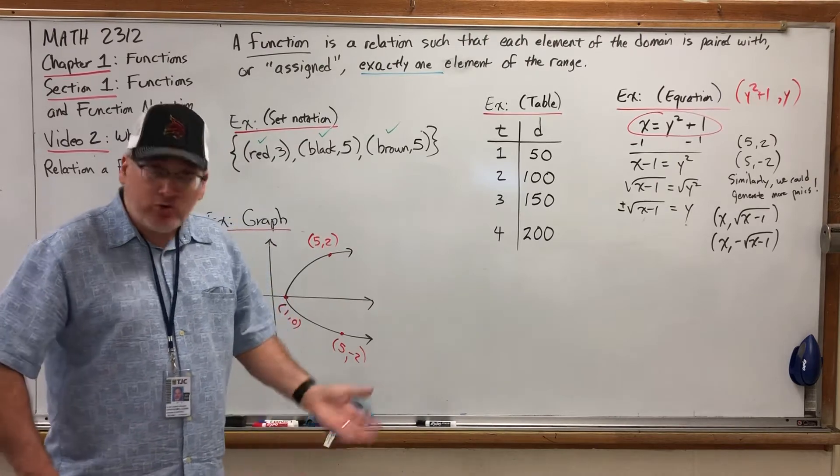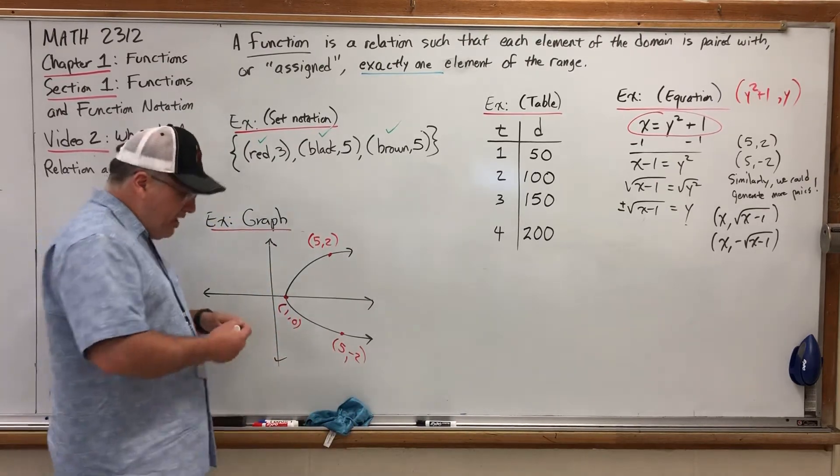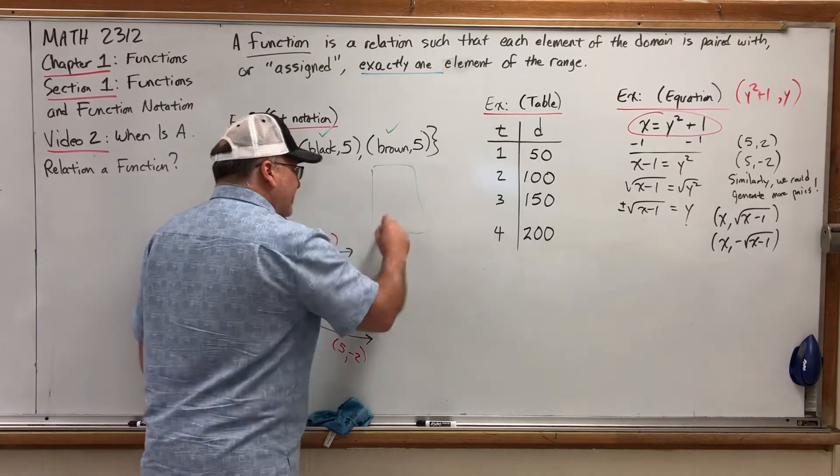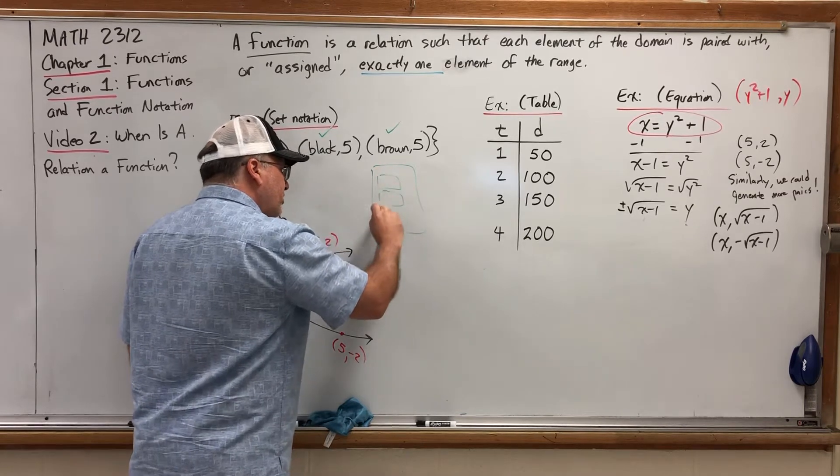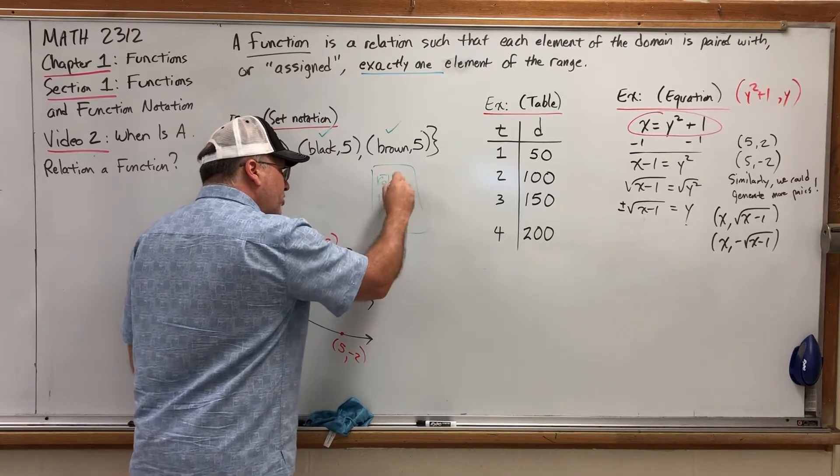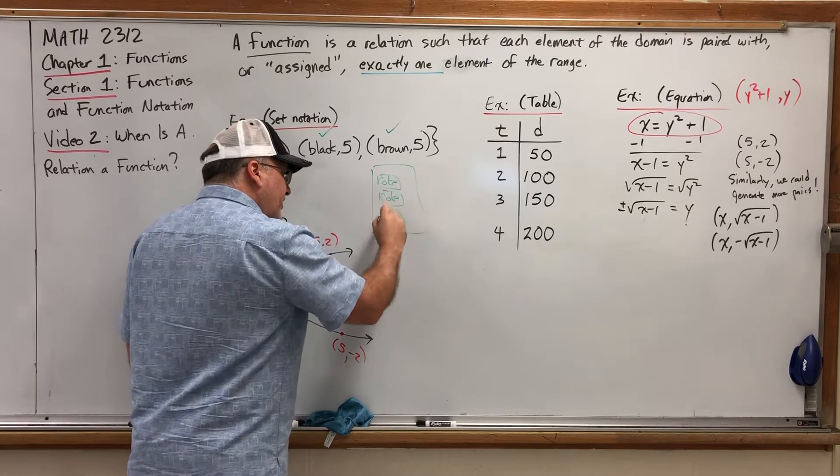It doesn't say each element of the range is paired with exactly one value from the domain, but rather each element of the domain is paired with exactly one value from the range. In other words, it's okay if multiple X's are paired with the same Y's. Think of it as a vending machine that dispenses sodas, Cokes, if you will, and you had a machine that had three buttons on it. One of them said Coke, one of them said Coke, and the other one said Dr. Pepper.